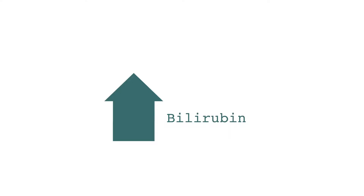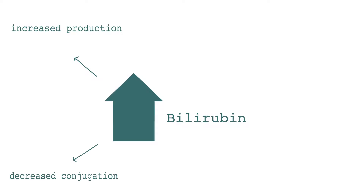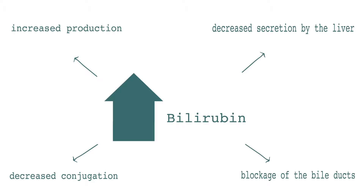Elevated bilirubin levels can be caused by increased production, decreased conjugation, decreased secretion by the liver, or a blockage of the bile ducts.